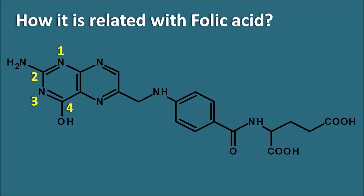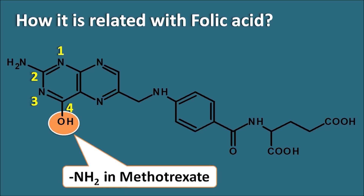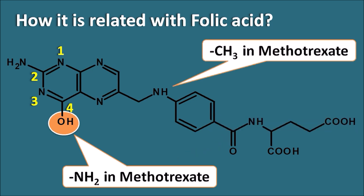Comparing methotrexate and folic acid: at the fourth position, folic acid has a hydroxyl group, whereas methotrexate has an NH2 amino group. Another difference is that the nitrogen in folic acid has no methyl group, but a methyl group is present in methotrexate. These are the only two structural modifications, making methotrexate a structural analog of folic acid — which explains its action related to folic acid utilization in the body.